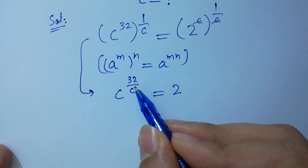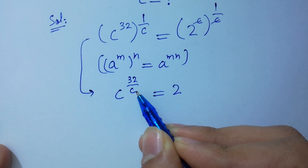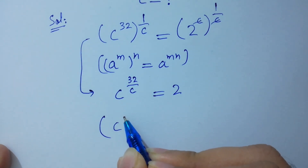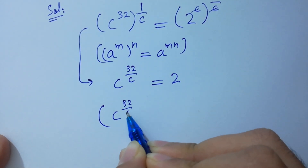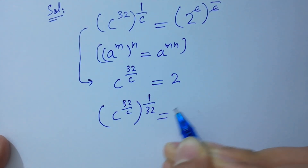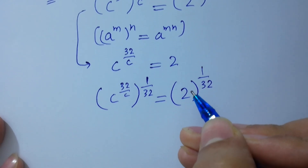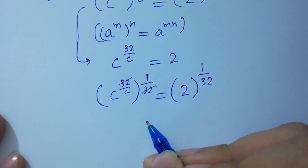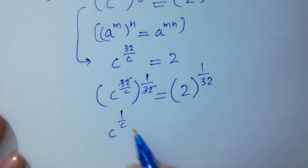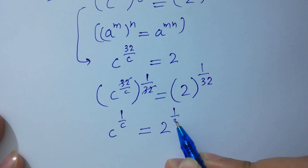Next, to get rid of this 32, take power 1 over 32 on both sides. Here, C to the power 32 over C, to the whole power 1 over 32, equals 2 to the power 1 over 32. Here 32 and 32 will be cancelled. We get C to the power 1 over C equal to 2 to the power 1 over 32.